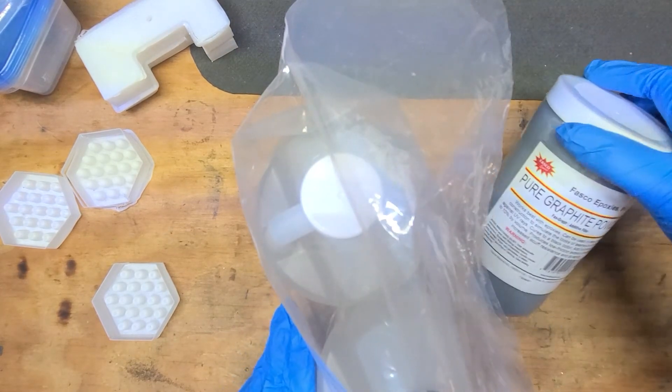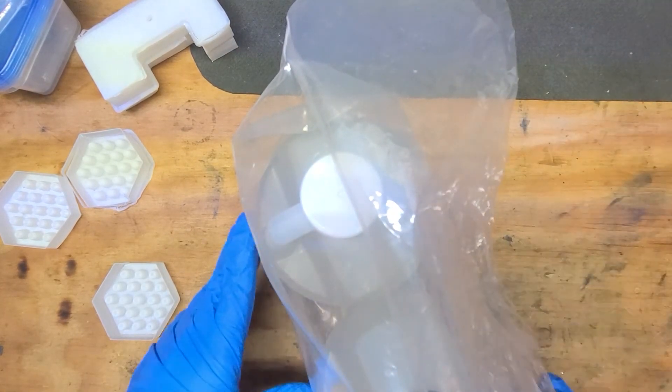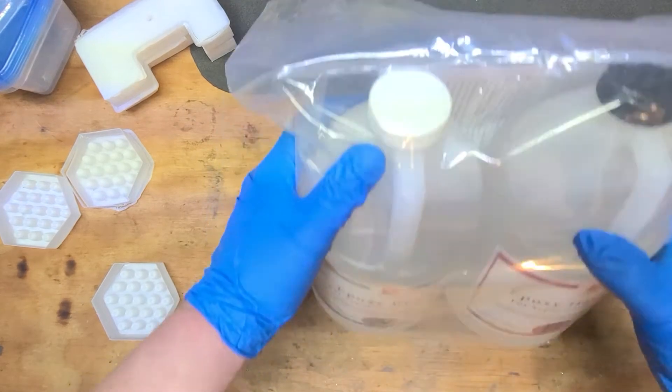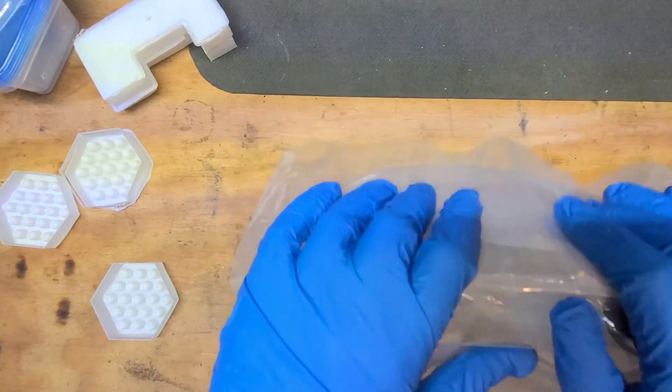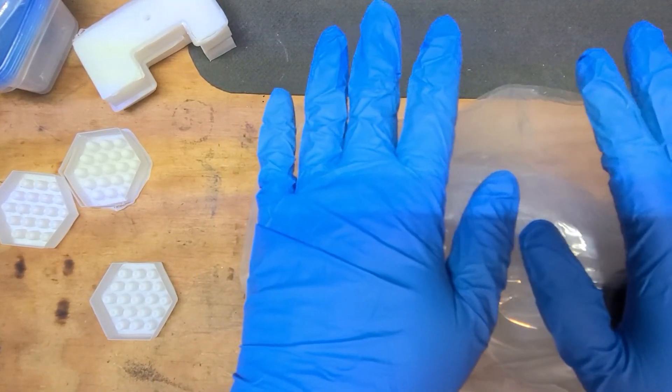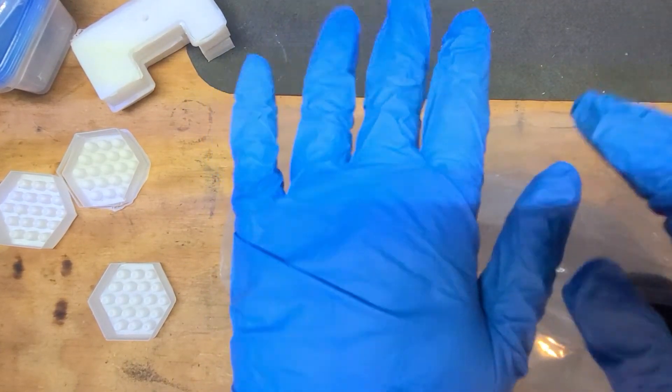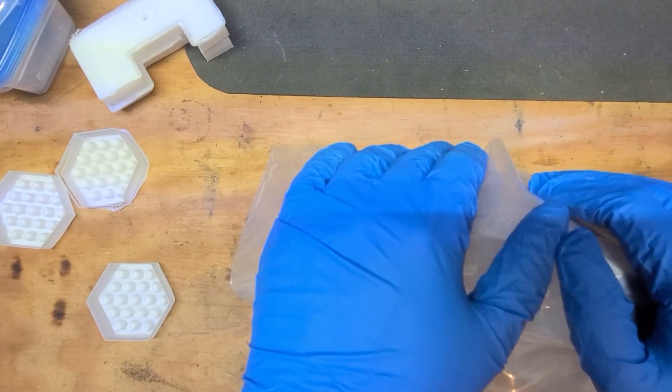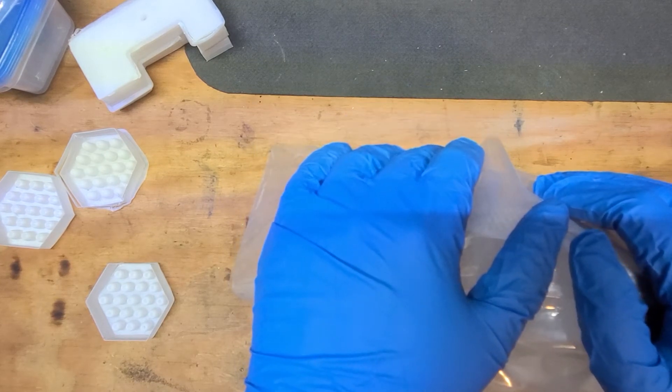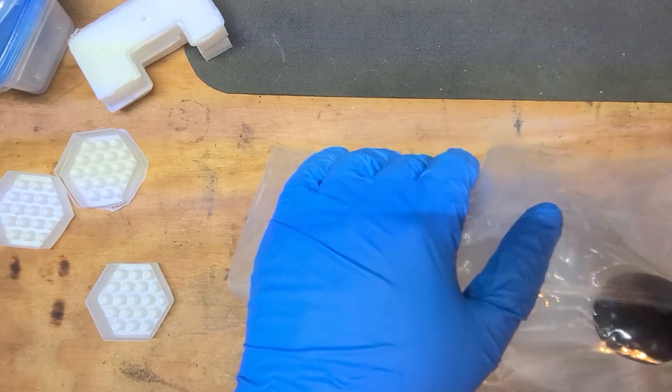Remember, the barrel liner is properly machined from Brownells, 22 long rifle caliber. That's going to contain most of these pressures. You wrap it in this.